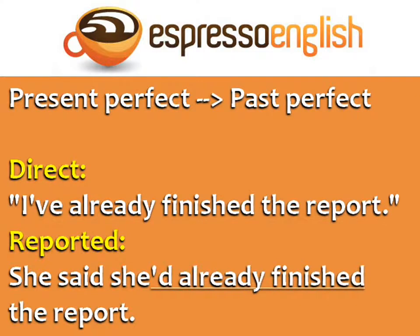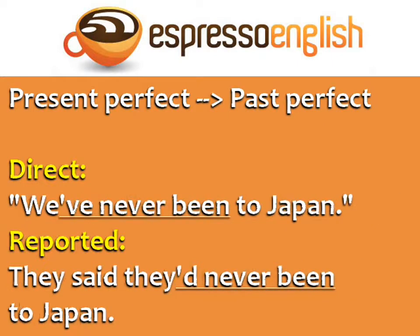Present perfect verbs become past perfect. Direct: 'I've already finished the report.' Reported: 'She said she'd already finished the report.' Here's another example. Direct: 'We've never been to Japan.' Reported: 'They said they'd never been to Japan.'